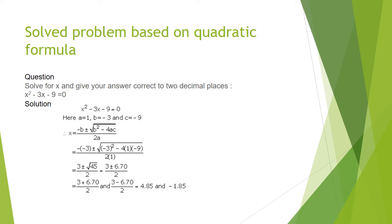Solve the equation for x using the quadratic formula and write the value of x up to 2 decimal places. The given equation is x² minus 3x minus 9 = 0. Taking values: a = 1, b = minus 3, c = minus 9. Applying x = (minus b ± √(b² minus 4ac)) / 2a and substituting the values, we get two values of x: one is 4.85 and the other is minus 1.85.